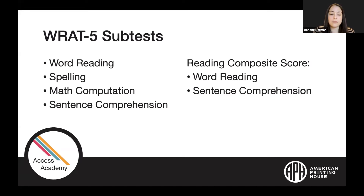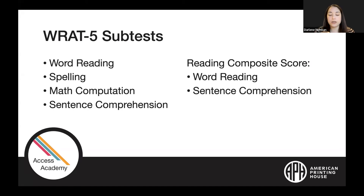Each subtest can result in a standard score based on age or grade norms. One thing to note: sentence comprehension is only administered for students in first grade through 12th grade and adults — it is not administered to kindergartners. So you will not get data points for kindergarten students and will not get a resulting reading composite score. All other subtests allow administration from kindergarten all the way through adulthood.